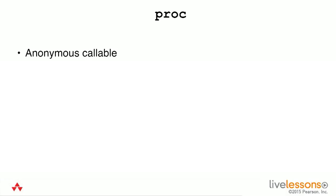In Ruby there are a number of ways to create anonymous pieces of code that we can move throughout our application. Proc is one such way to create an anonymous callable. Procs are instantiated in Ruby whenever you call proc.new, whenever you use the to_proc syntax, or indeed when you fully capture a block into an enclosing scope.